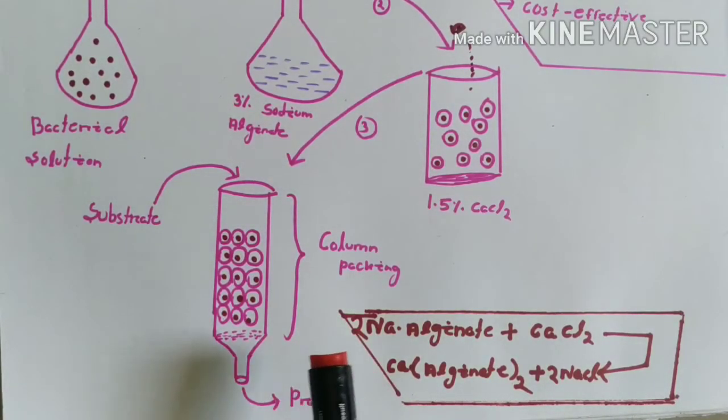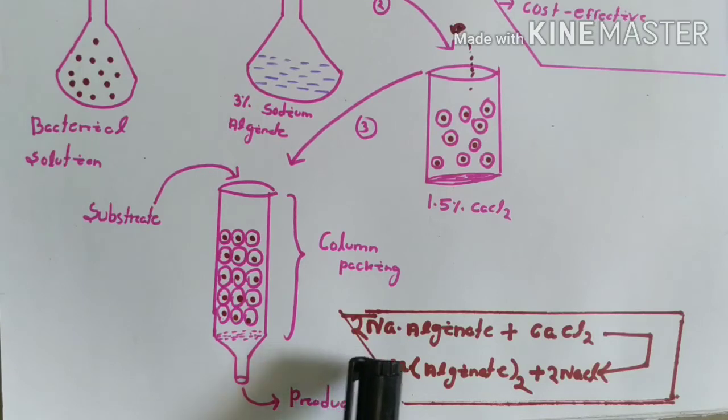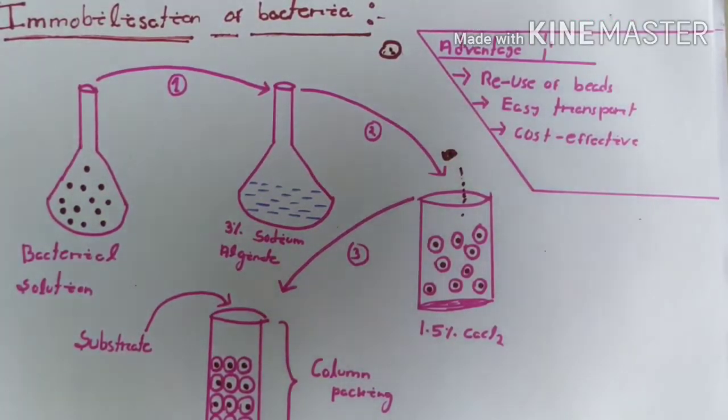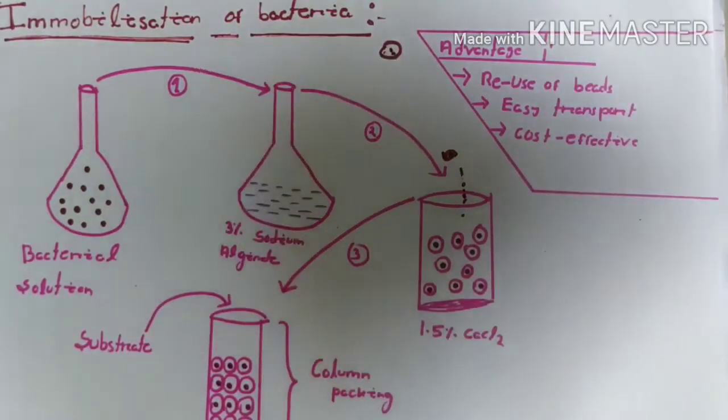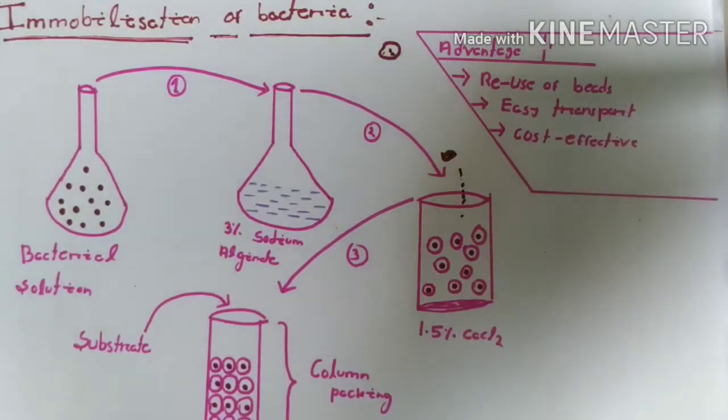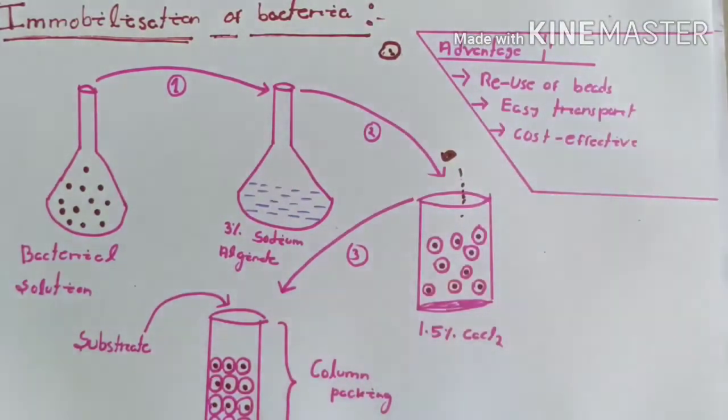After adding the substrate, the reaction for the immobilization can be as follows: At the molecular level, the formula is two sodium alginate plus calcium chloride, which gives rise to calcium alginate two and sodium chloride. This process has several advantages like the beads can be reused, the device is easy to transport, and it is a cost-effective way.